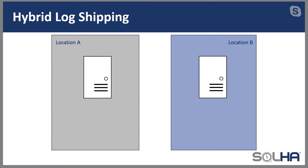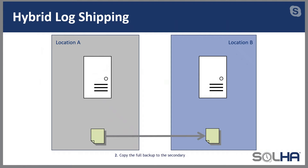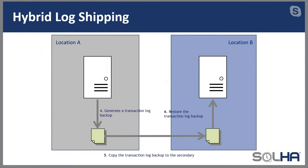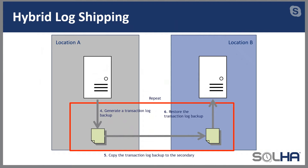Let's talk first about log shipping. Most of you know what this is, but I just want to reiterate because we have to look at it slightly differently. Location A could be your on-premises, location B could be an Azure region. Simply put, you take a full backup of your SQL Server database, copy it to what will be the secondary server, and restore the full backup with no recovery — I need to stress that. Then you generate a transaction log backup, it gets copied over to the secondary, and gets restored with no recovery. That process just repeats until you either stop it or something happens.